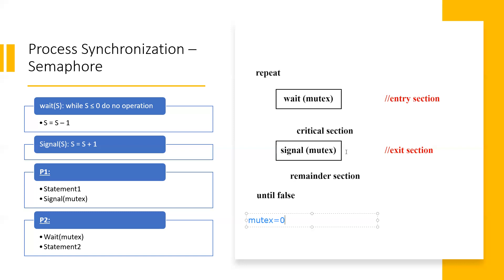Here the signal is on. If the semaphore variable is zero, it means that the critical section is already occupied by some other process and right now there is no process that can occupy it. If the value is 1, it means that the critical section is available.